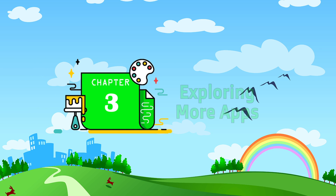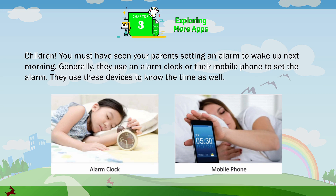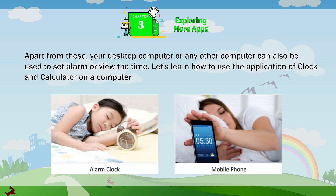Chapter 3: Exploring more apps. Children, you must have seen your parents setting an alarm to wake up the next morning. Generally, they use an alarm clock on their mobile phone to set the alarm and to know the time as well. Apart from these, your desktop computer or any other computer can also be used to set an alarm or view the time. Let's learn how to use the applications of Clock and Calculator on a computer.